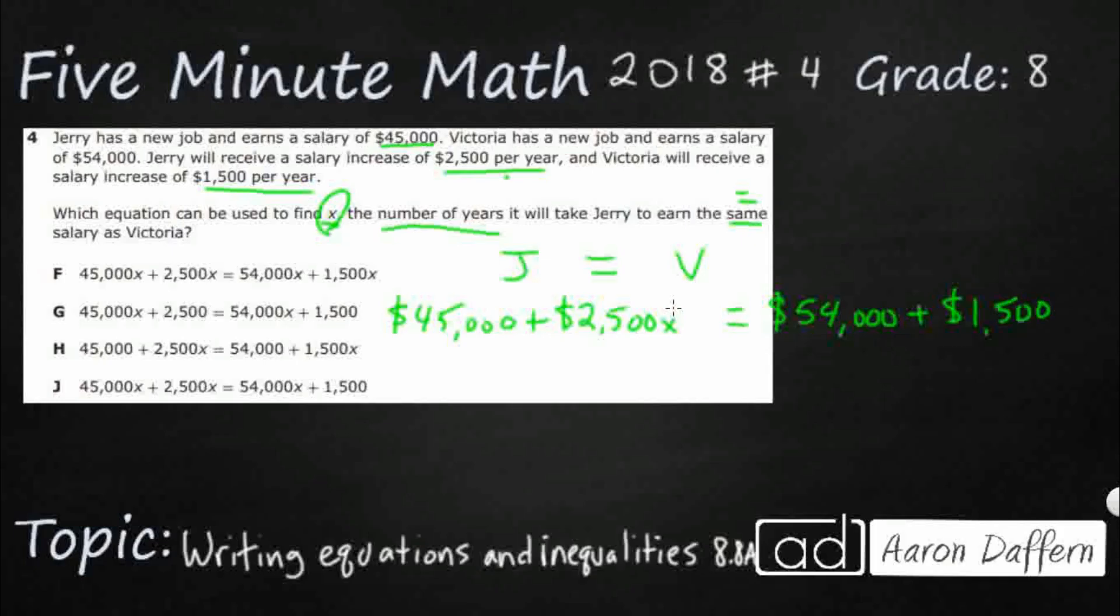So it looks like we've kind of worked through the word problem. And it almost looks like we've got slope-intercept form on both sides. We've got our coefficients, $2,500, $1,500, that's being multiplied by our variable, which is the X, in this case, the number of years. But then we also have our constants, which don't change. The $54,000 starting point for Victoria, the $45,000 starting point for Jerry.